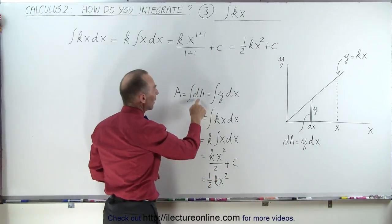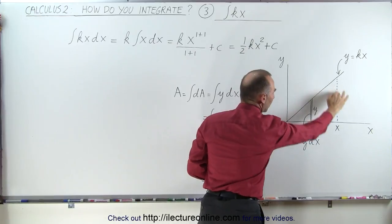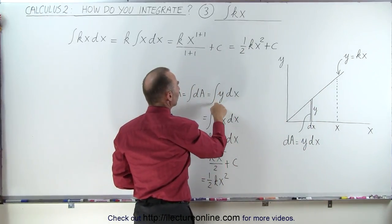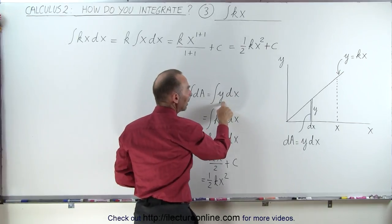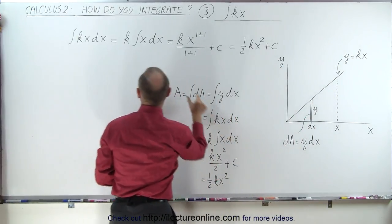Now when we integrate that dA, we should get the area, the whole area underneath this triangle here, or inside this triangle. And so that would be equal to the integral of y dx. And since y is equal to k times x, we can write k times x, which is what we had over here.